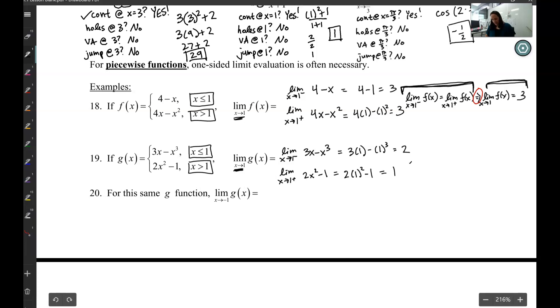Now we say the limit as x approaches 1 from the left of f(x) did not equal the limit as x approaches 1 from the right of f(x). Therefore, the limit as x approaches 1 of f(x) does not exist because those are not equal.